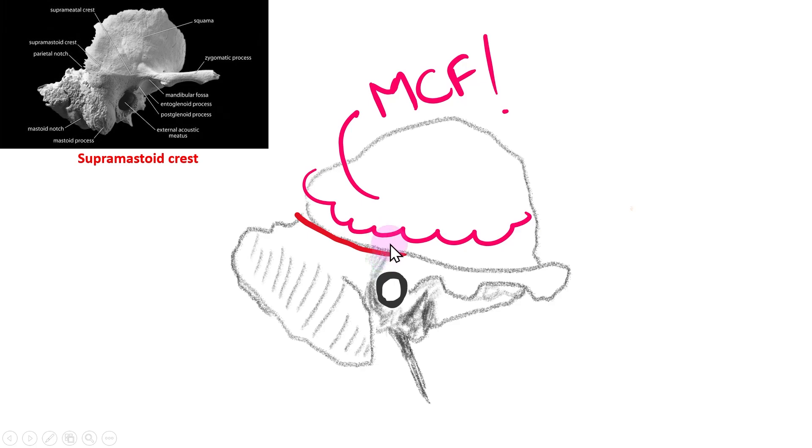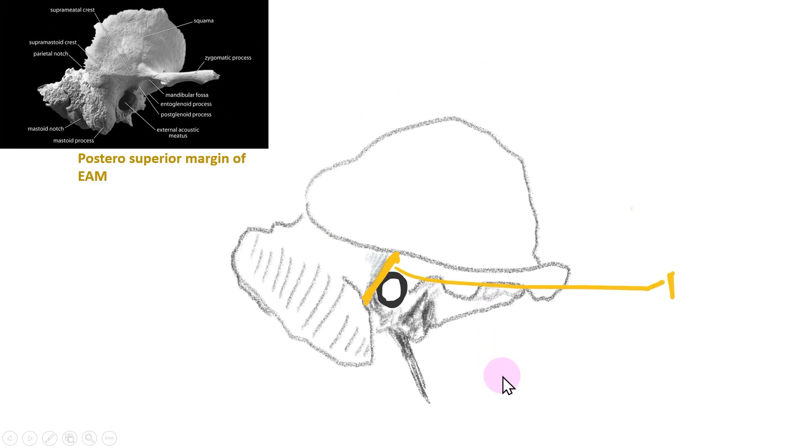The posterior superior margin corresponds to the tract of the facial nerve. If you remain posterior and superior to this border, you are at least risk to injure the facial nerve.